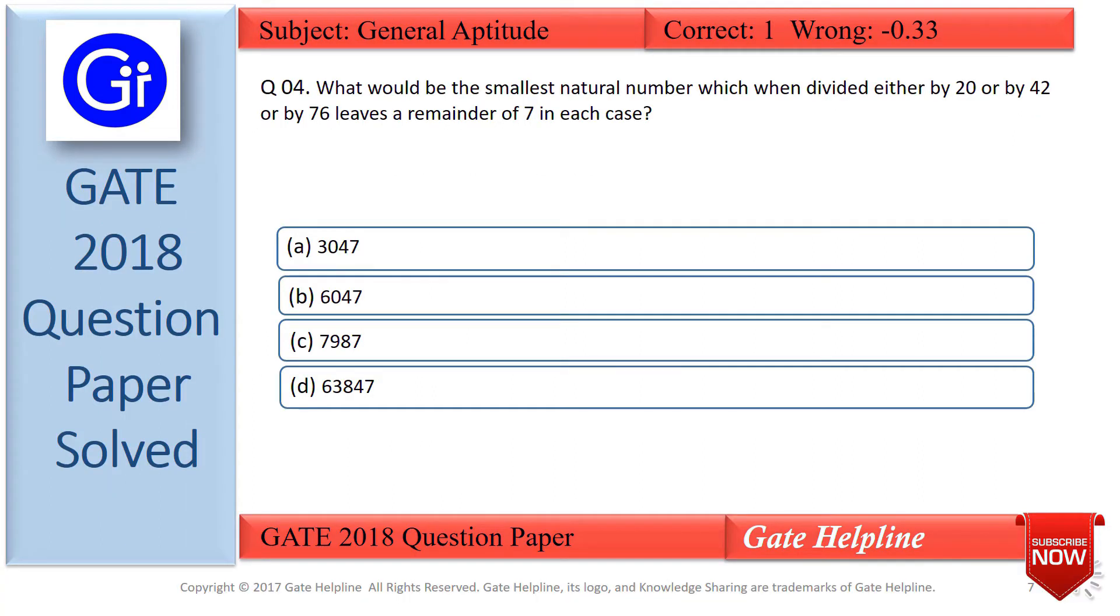As per our explanation, the answer to this question is option C, that is 7987, which is the smallest natural number that when divided either by 20 or by 42 or by 76 leaves a remainder of 7 in each case.